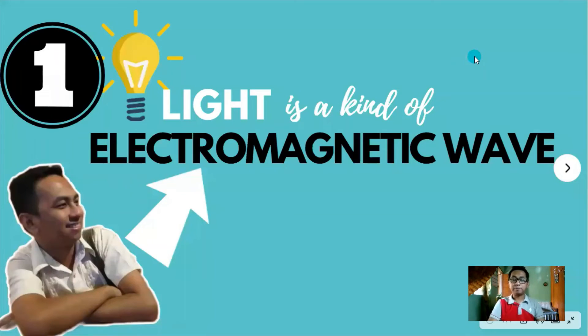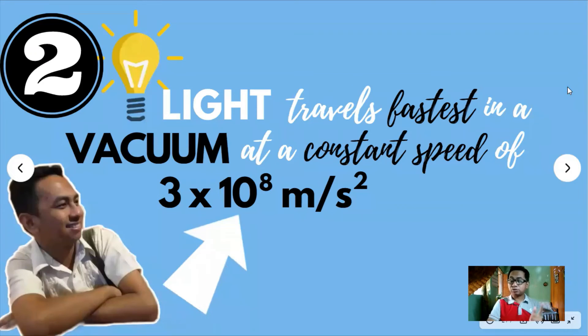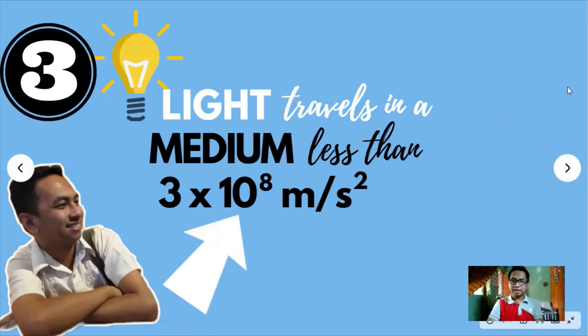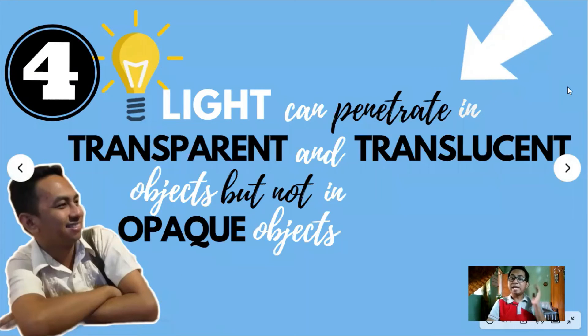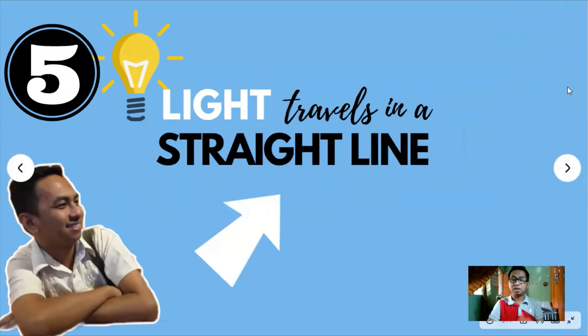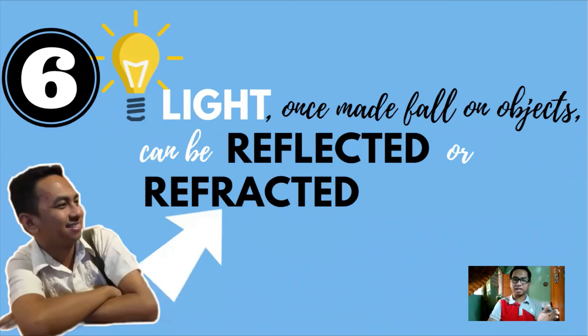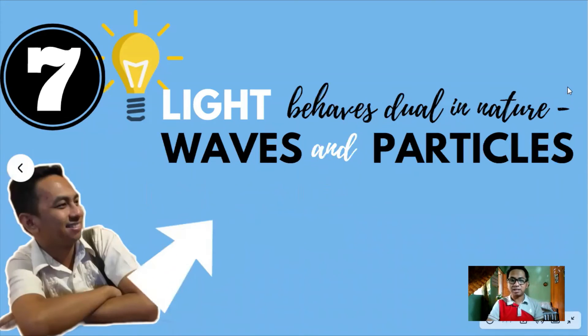Now, let us summarize what we have learned about the characteristics of light. First, light is an example of electromagnetic wave. Second, light travels fastest in a vacuum with a constant speed of 3 times 10 to the 8th power meters per second. Third, light travels in a medium less than 3 times 10 to the 8th power meters per second. Fourth, light can penetrate through transparent and translucent materials or objects but not in opaque objects. Fifth, light travels in a straight line. Sixth, light once made fall on objects can be reflected or refracted. And last but not the least, light behaves dual in nature - waves and particles.